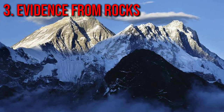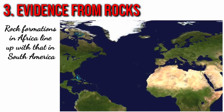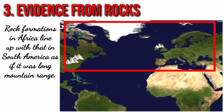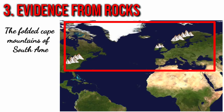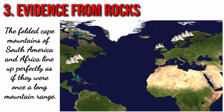Rocks also provide evidence that continents drifted apart. Rock formations in Africa line up with those in South America as if they were once a long mountain range. The folded cape mountains of South America and Africa line up perfectly, as if they were once a continuous mountain range.